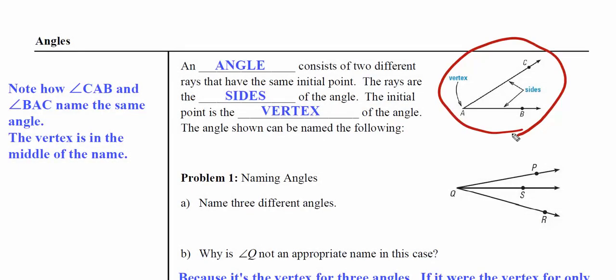An angle consists of two different rays that have the same initial points. Note there's ray AC and ray AB. They both have A as an initial point, so this is an angle.